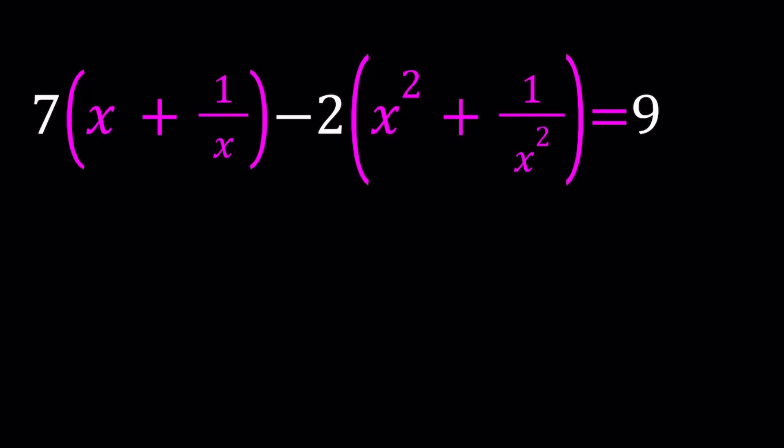Hello everyone. In this video, we're going to be solving an interesting rational equation. You'll probably turn this into a polynomial equation too, but as is, it's going to be a lot easier to deal with. So we have 7 times the quantity x plus 1 over x minus 2 times the quantity x squared plus 1 over x squared equals 9. And we're going to be solving for x values. I'm also going to show you a graph at the end, which is pretty interesting.